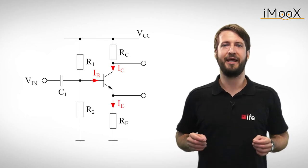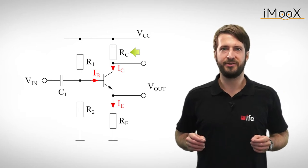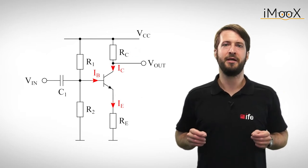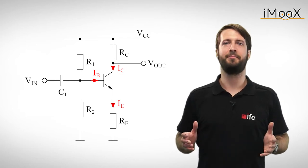If we simply add a resistor at the collector of the transistor and move the output to the collector, we can build ourselves a basic voltage amplifier, which is also called the common emitter amplifier.